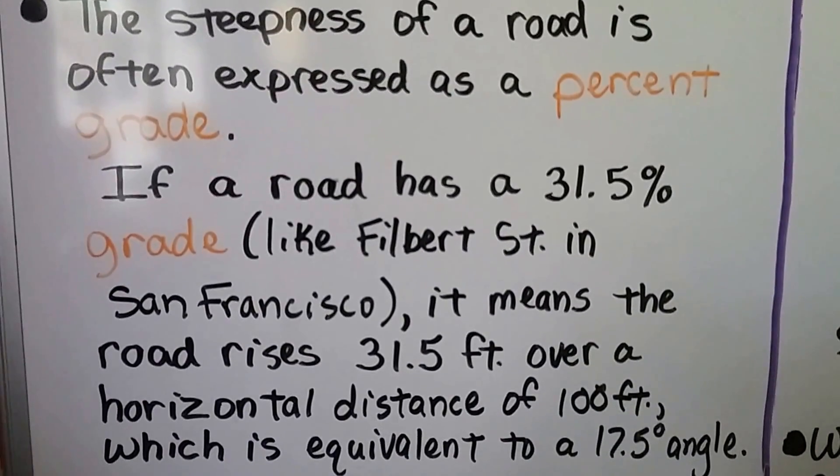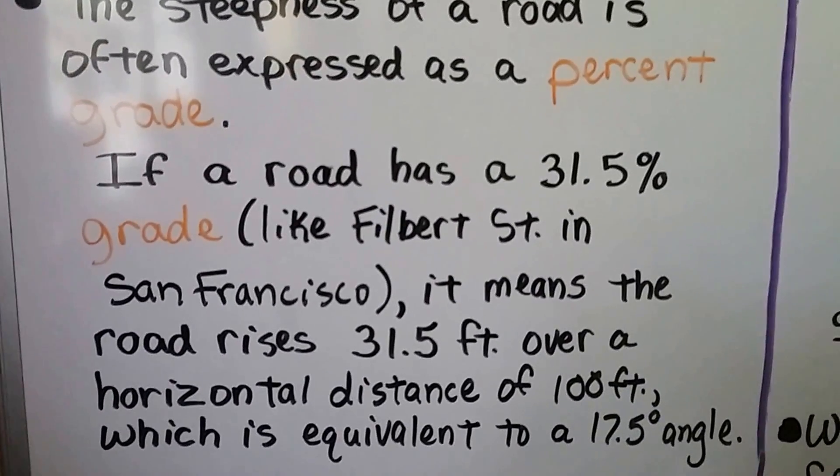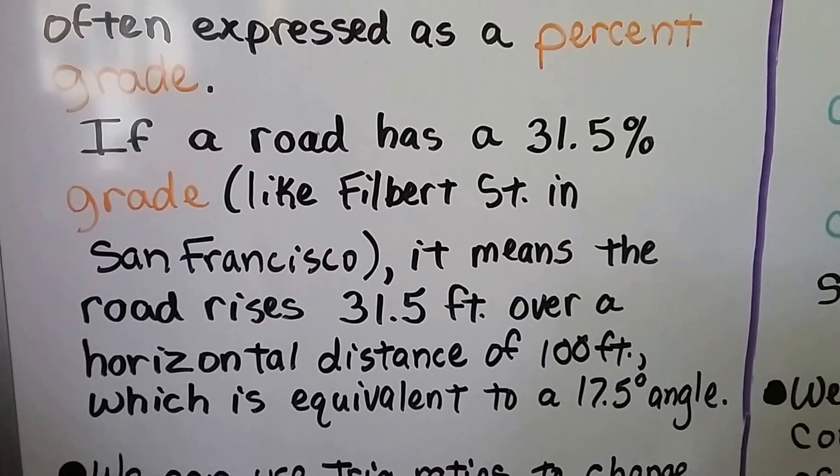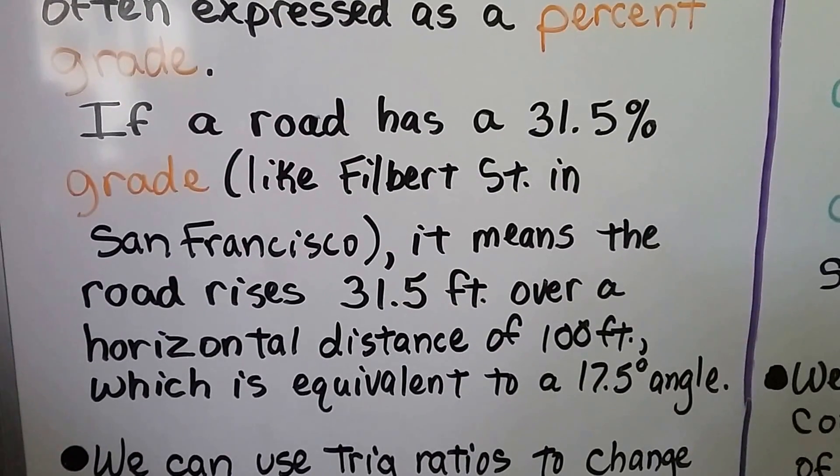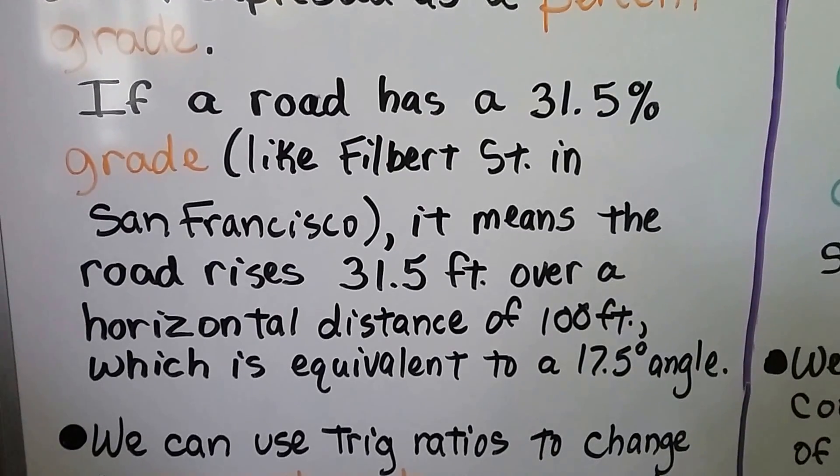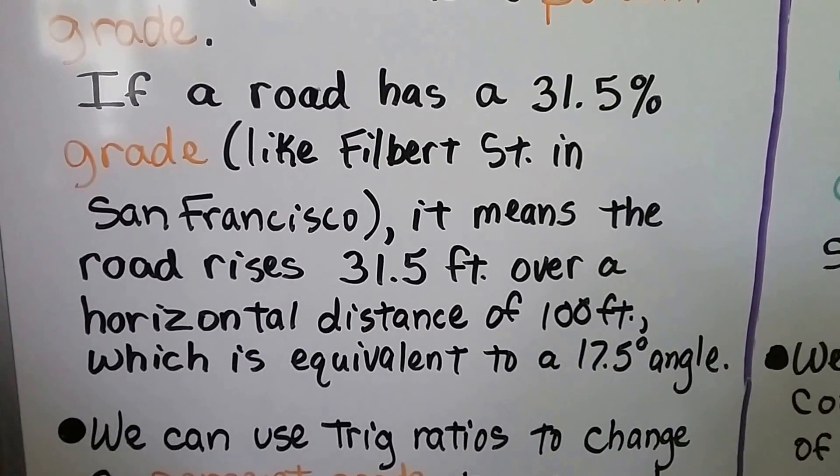If a road has a 31.5 percent grade, like Filbert Street in San Francisco, it means the road rises 31.5 feet over a horizontal distance of 100 feet, which is equivalent to a 17.5 degree angle.